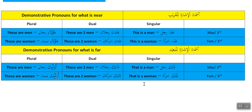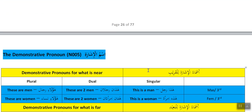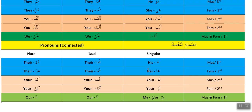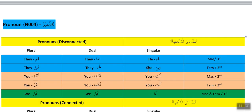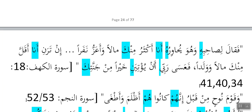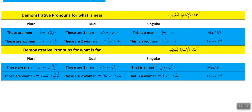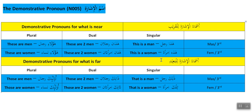To put this lesson in perspective: we are talking about words that are definite. We make words definite by putting alif and lam in front of them. In a previous lesson we talked about pronouns — disconnected and connected. And here we're talking about demonstrative pronouns.